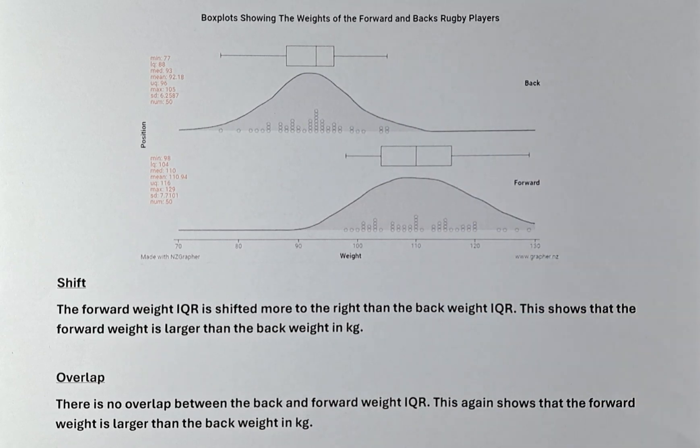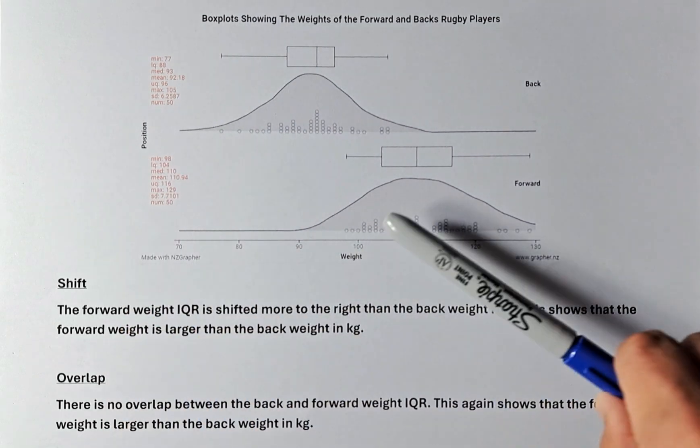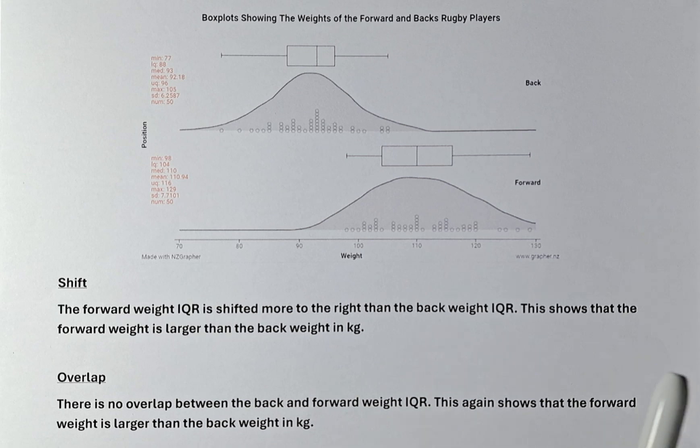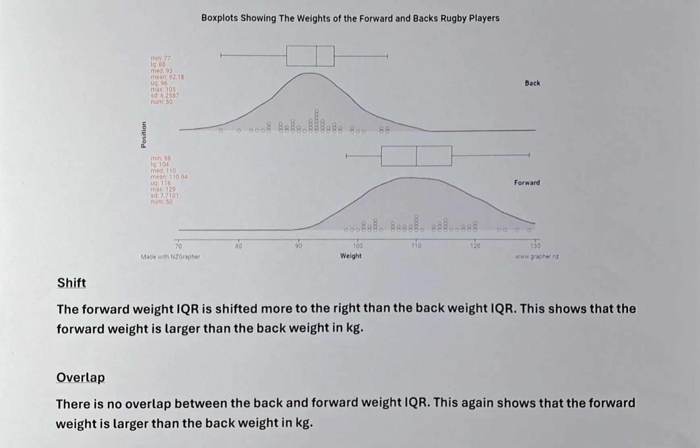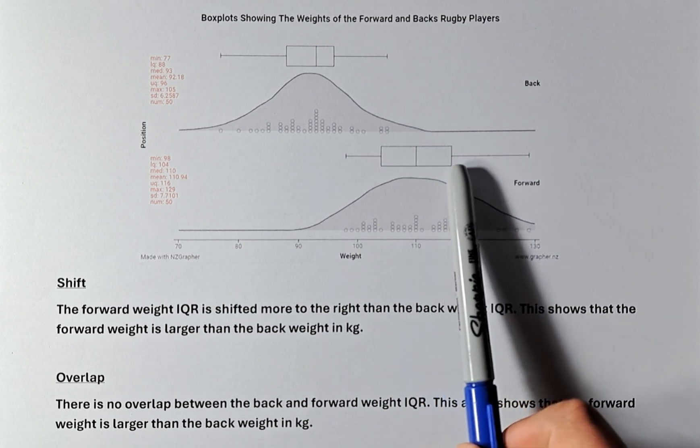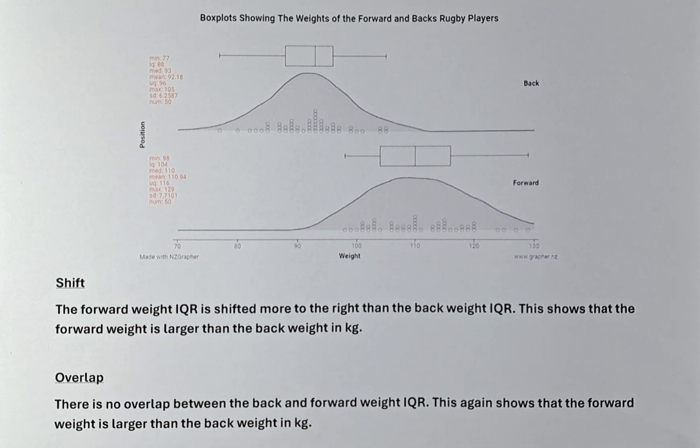Because it is more to the right, what we can say is, as you know the graph, if you have a graph here, the y-axis and the x-axis, the more to the right means the values are bigger. So, we can say that the forward weight is larger than the back weight in kilograms. This IQR is more shifted to the right and we can say that the forward weight is heavier than the back weight.